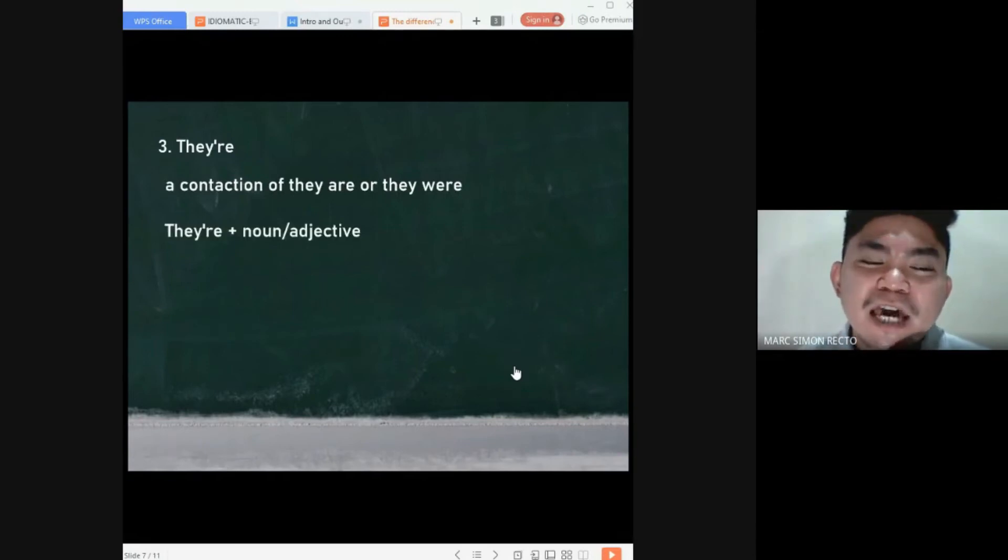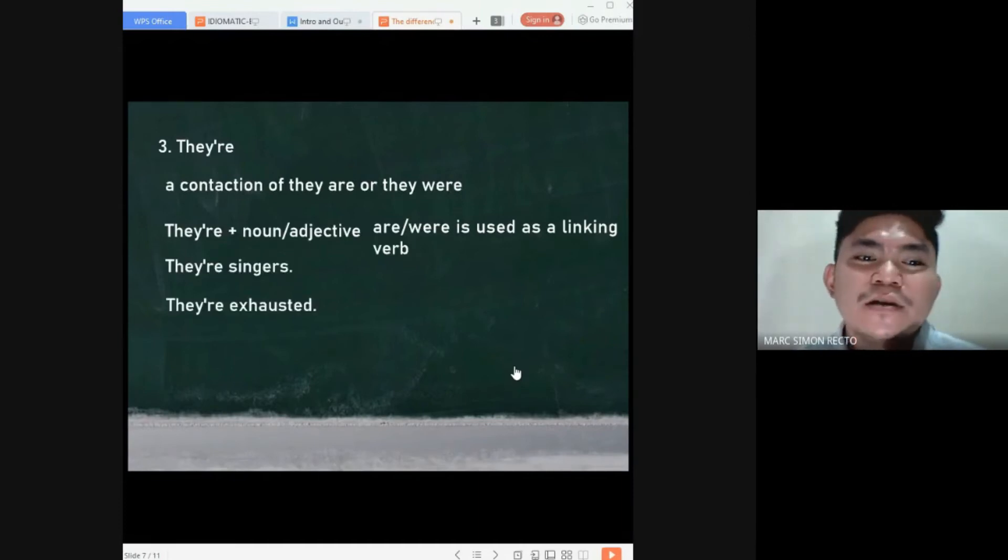It could be they're plus noun or adjective and it is used as a linking verb. For example, they're singers. They're exhausted. Now, they're singers. Singers, there is a noun. So, what I mean there is they are singers. But when we read this sentence, we usually say they're singers. The other sentence there is they're exhausted. When I said exhausted, we are using their as a linking verb. So, what I mean there is they are exhausted.